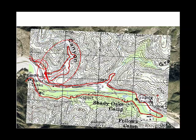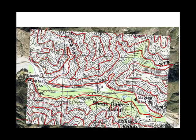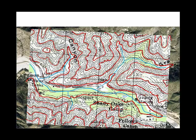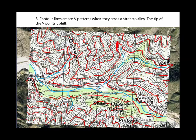Because if you wanted to jump across the river, you would find yourself going down to the stream and back up again — you wouldn't be keeping the same elevation. Those detours can be found on all the contour lines, and that gives us another rule: contour lines create a V pattern when they cross a stream valley, and the tips of the V's point uphill.